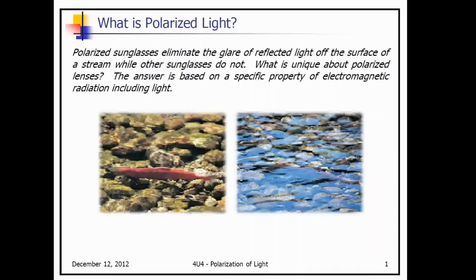You might have heard 'polarized' when it comes to sunglasses. What polarized sunglasses do is they eliminate the glare of reflected light off of horizontal surfaces. So if you're wearing polarized glasses and you're looking at the surface of a stream, you'll be able to see through to the bottom without seeing the reflection on the surface.